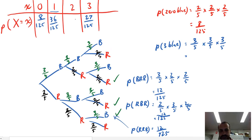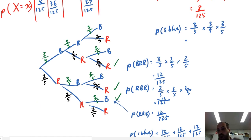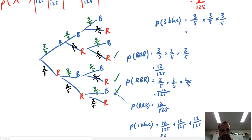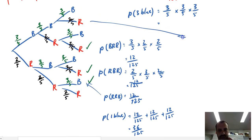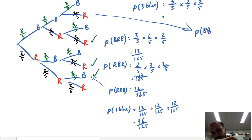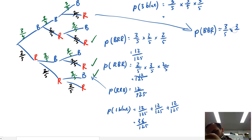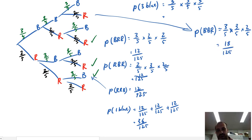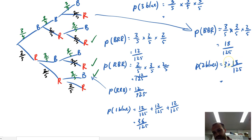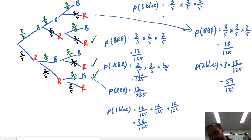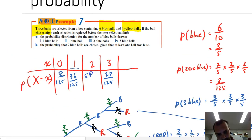We just need to find the probability for two blue balls. I only have to do one of these branches and then multiply it by three. The probability of blue, blue, red is three-fifths times three-fifths times two-fifths, which is eighteen over one hundred and twenty-five. The probability of two blues is equal to three times that, because there are three branches where that occurs, so that's fifty-four over one hundred and twenty-five.